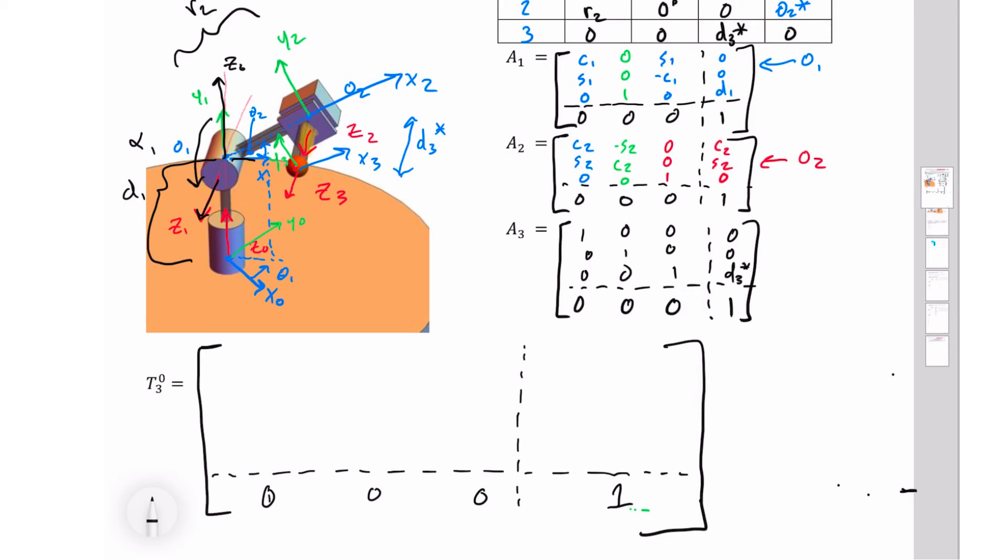Now we want to look at what this matrix tells us. I want to remind you that what it's telling us is where is my x3 in terms of x0. That's what this first column is. You can see that the x component is c1c2, and the y component is s1c2. And then finally, s2 is how high it is.